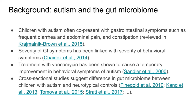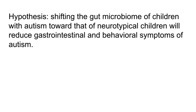There have also been a number of cross-sectional studies that compare children with autism and neurotypical controls and show differences in the gut microbiome between those children. Interestingly, these were performed by different research groups with different cohorts of children. Piecing this together, the team I was working with — based in part at the Arizona State University Autism and Asperger's Research Center — started with the hypothesis that if we could shift the gut microbiome of children with autism to look more like that of neurotypical children, we could reduce the gastrointestinal and behavioral symptoms of autism.